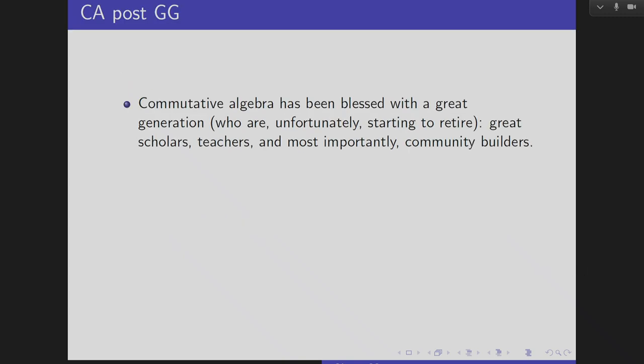So I think I would start with some non-mathematical comments. What is CA? Commutative algebra. What is GG? Golden generation. So commutative algebra has been blessed with a great generation who are, unfortunately, starting to retire.